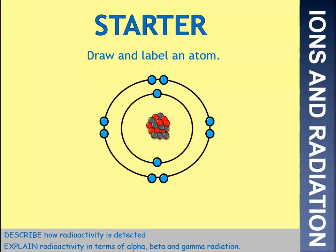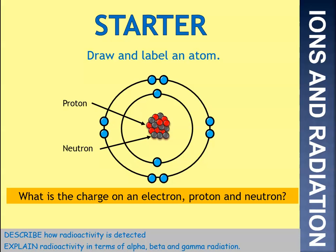An atom should look like this. It should have protons and neutrons in the centre, and electrons orbiting around the outside. The number of electrons orbiting outside the nucleus should be the same as the number of protons in the nucleus. What's the charge on the electron, proton, and neutron? Proton is positive, negative for electron, and no charge for a neutron.